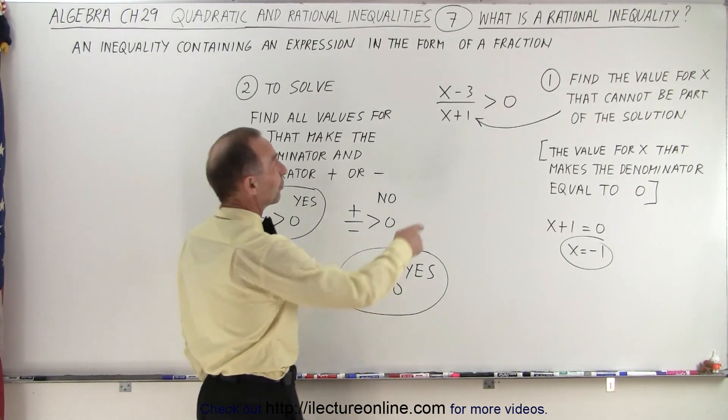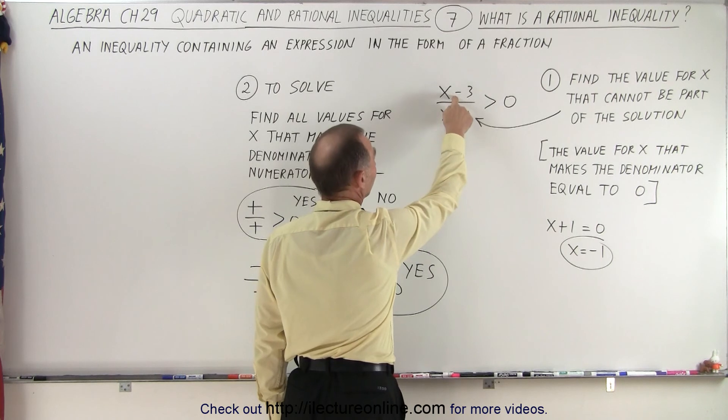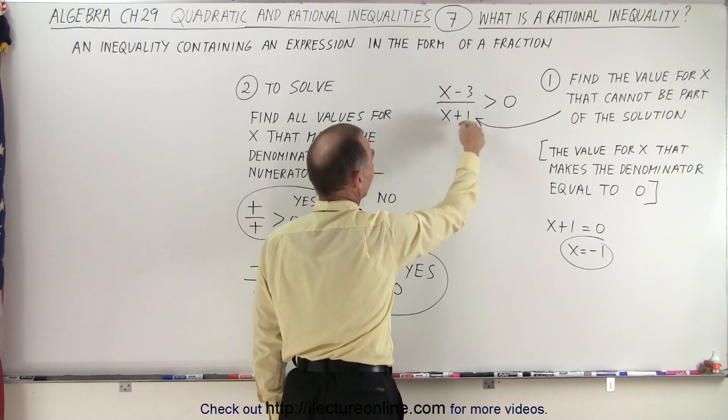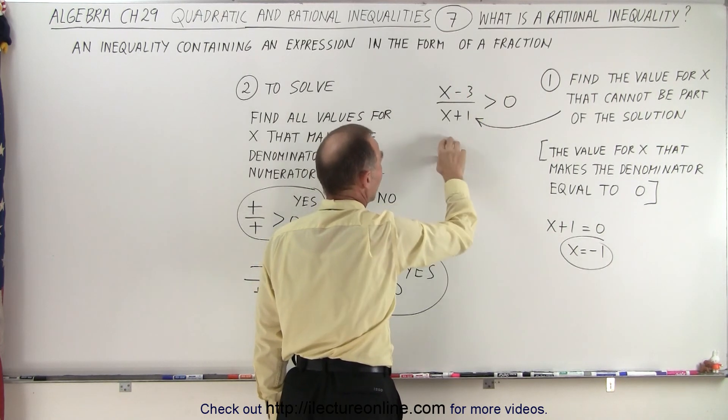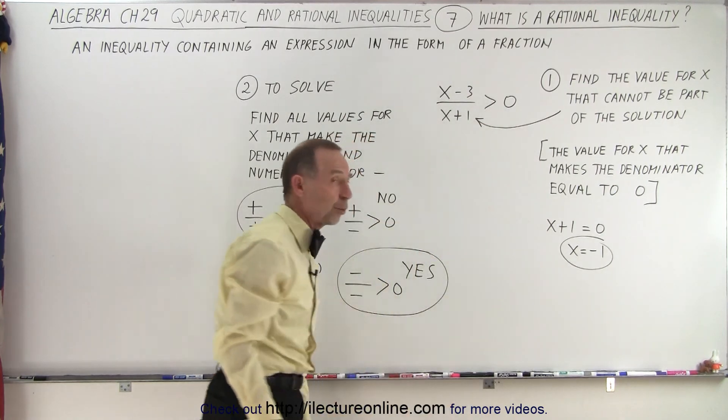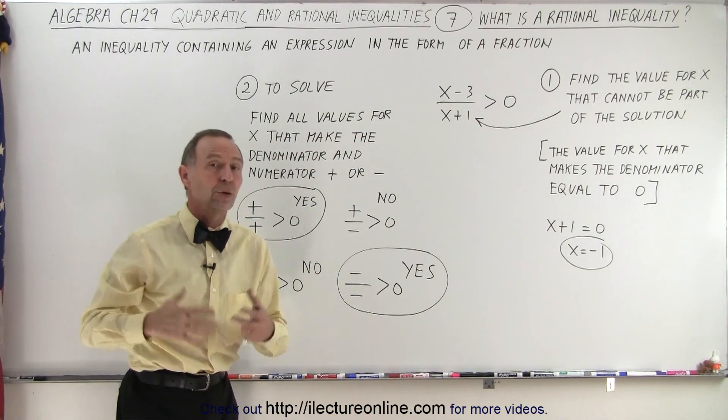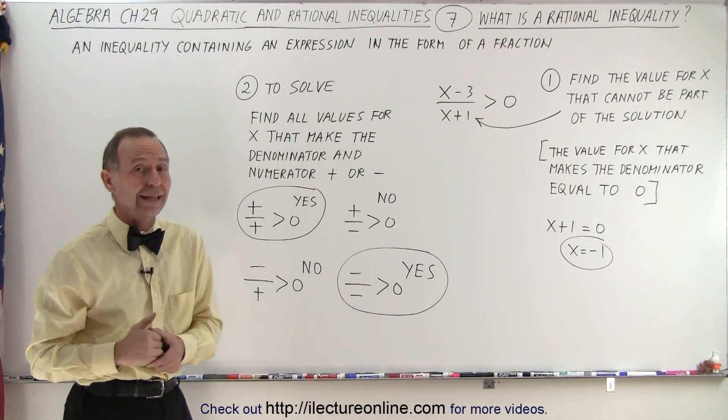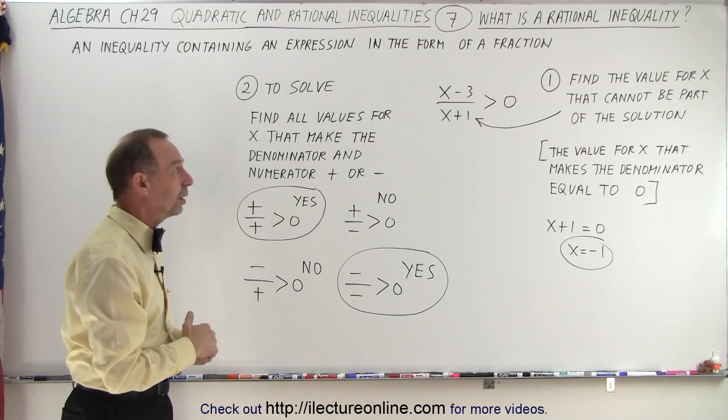And so here's an example of what that might look like: x minus 3 divided by x plus 1, so this is an expression that's in the form of a fraction, greater than 0. Of course, it also needs to contain a greater than or a less than symbol in order to make it an inequality.